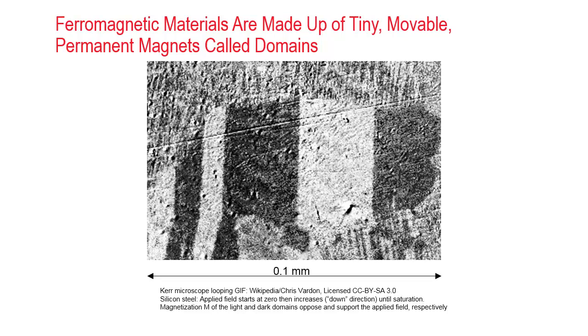The experiment is going to apply an external magnetic field in the down direction and this is going to expand the dark domains until they completely push out the light colored domains. And this is the point where we get saturation.